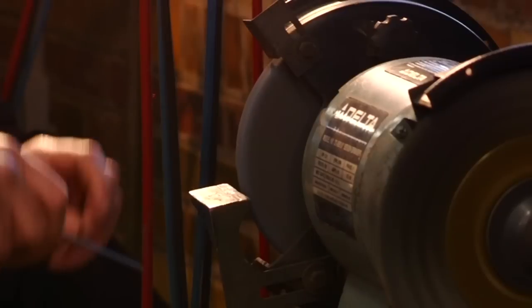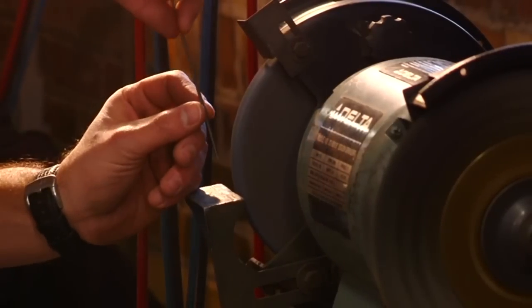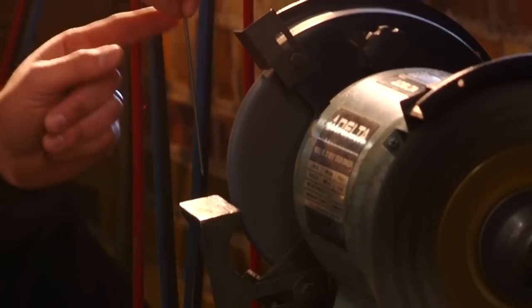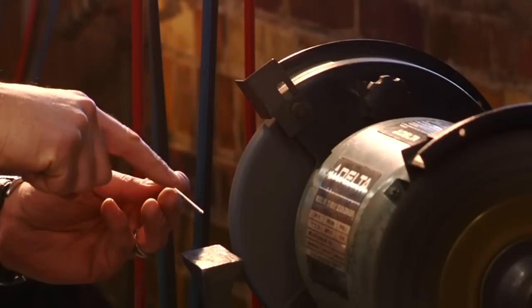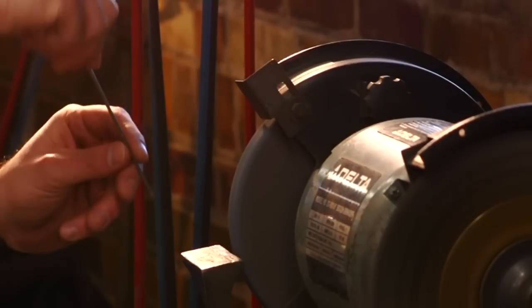You will want to hold the electrode parallel to the wheel as opposed to perpendicular. This ensures that the grind marks are running the length of the tungsten rather than across it and aids the flow of current down the electrode.